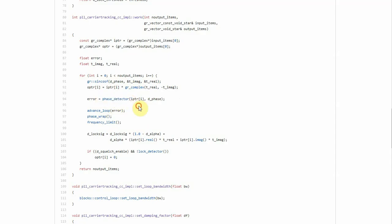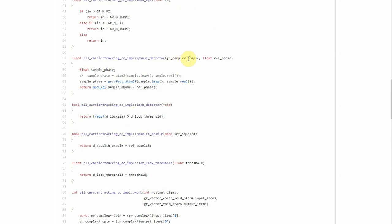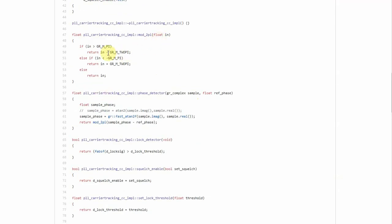Phase detector is called here with input and phase. Let us see what this function is doing. The phase detector takes a sample and a reference phase. It uses atan2, which computes four quadrant inverse tangent function, whose input is the real and imaginary parts of the complex sample. And then we simply take the difference between the sample phase and the reference phase. Mod 2 pi is another function which just makes sure that the phase does not exceed the minus pi to pi limit. So if it is greater than pi, 2 pi is subtracted from the input. And if it is less than pi, 2 pi is added to it.